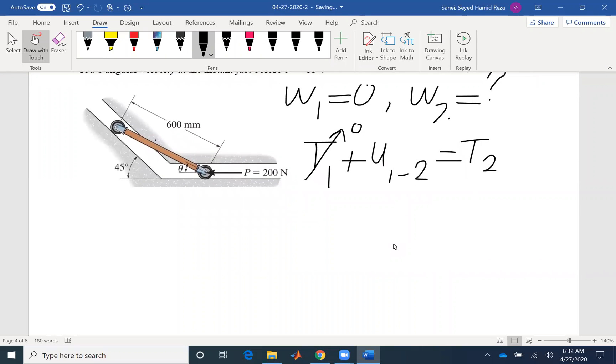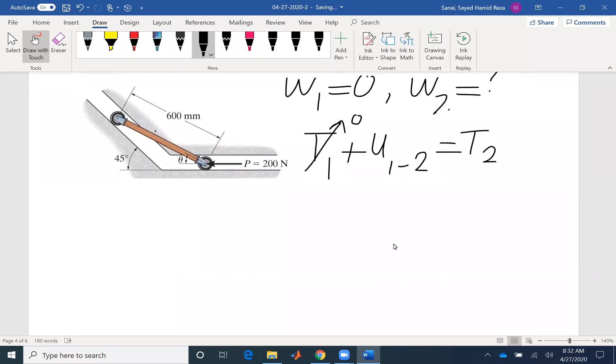To help us find the work, let's draw the first position and the second position. That's the first position, and then at the second position our rod would be on that 45 degree incline. So we have our force F which is 200 newton. Also we have the center of gravity here that is moved to the inclined surface.